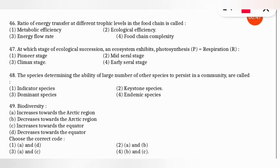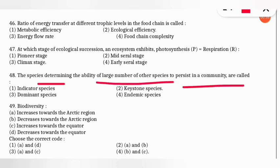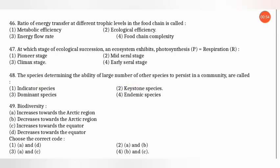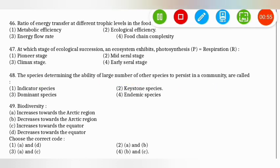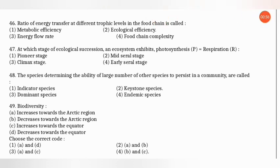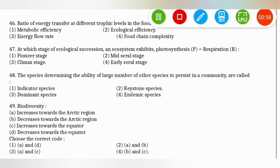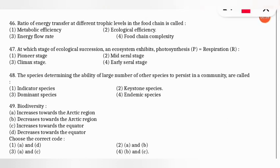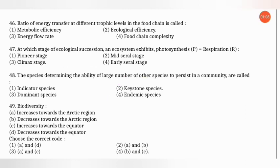Question 48: species that determine the ability of a large number of other species to persist in a community are called what? The correct option is option 2 — keystone species are the species that determine the ability of large numbers of other species to persist in a community.